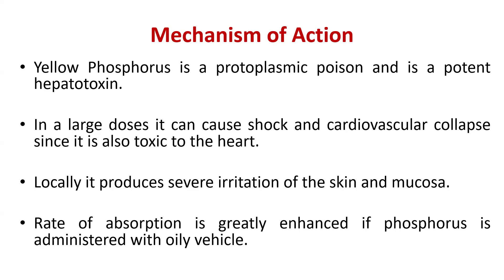Yellow phosphorus is a protoplasmic poison and is a potent hepatotoxin. Protoplasmic poison means it causes necrosis — it kills the cell. In large doses, it can cause shock and cardiovascular collapse since it is toxic to the heart — it is cardiotoxic. Locally, it produces severe irritation of the skin and mucosa.